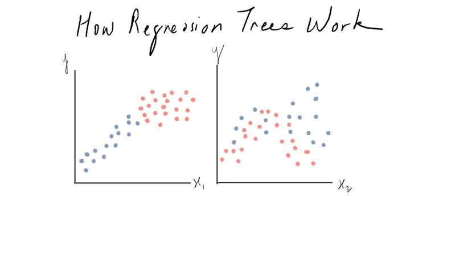Finally, we're going to look at another example. This time the example shows two predictor variables — so how does the regression tree work in this situation? Looking at the data, I've colored the data points blue and red to highlight the partitions. When we examine the data in the x1 dimension, we note that the partition that seems to enable a good linear fit would be somewhere around here.